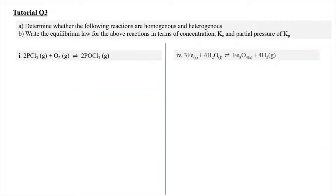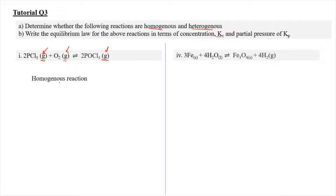For tutorial question 3, we need to determine whether the following reactions are homogeneous or heterogeneous, and then write the equilibrium law in terms of concentration Kc as well as partial pressure Kp. For the first equation given, homogeneous means coming from the same species — the states of matter here are gas, gas, and gas. Because the reaction happens in the same states of matter, it is a homogeneous reaction.